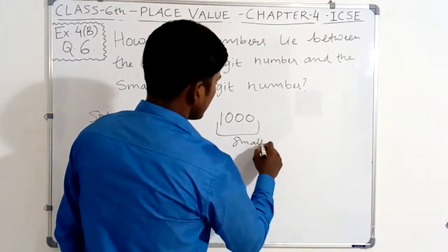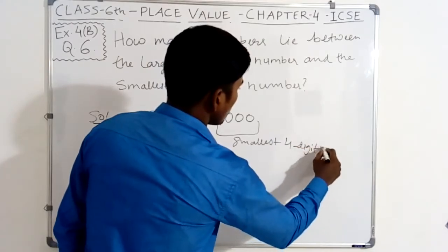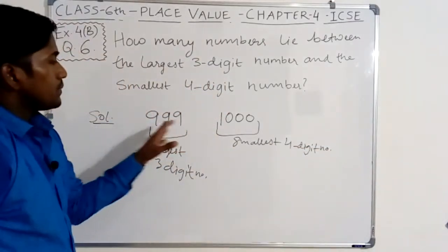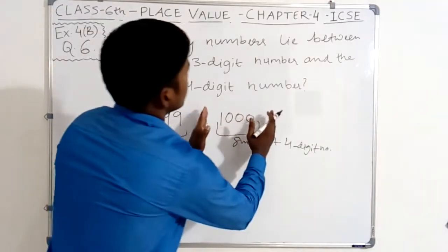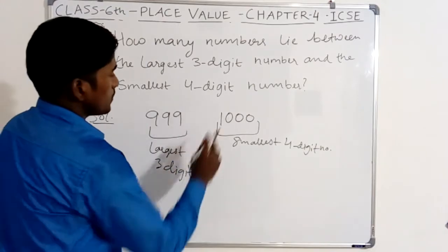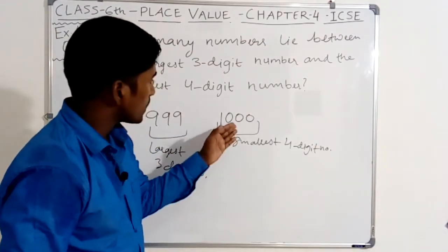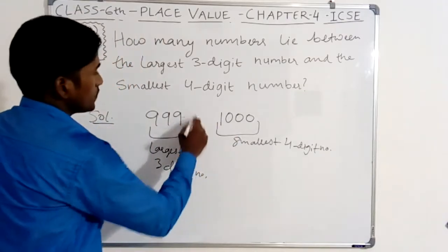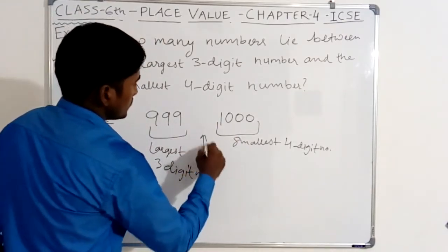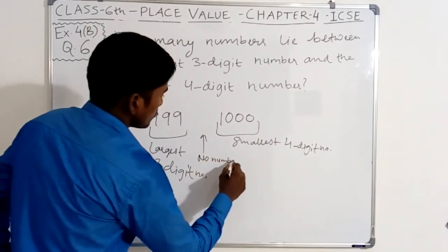You have the largest number, 999, and the smallest four-digit number, 1000. Between these numbers, there are no numbers.